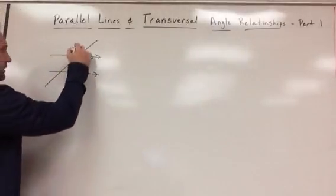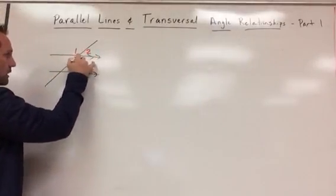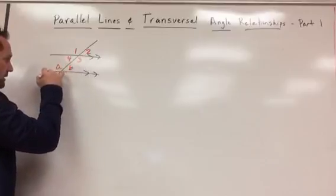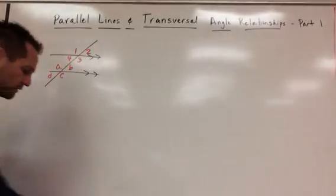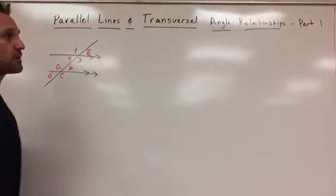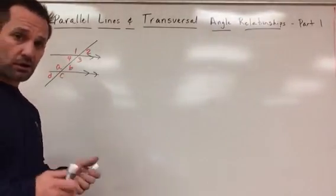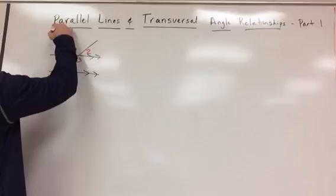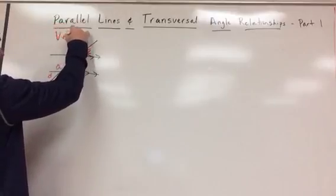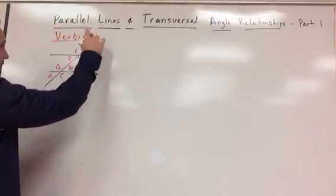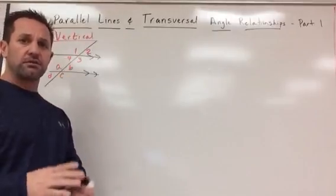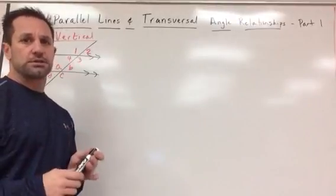So I'm going to label these angles. And I'm going to label them one and two and three and four. And then I'm going to go A, B, C, D. Okay, so eight different angles. And the first pair of angle relationships that we're going to talk about, you've actually already heard and you've done some work. They're going to be vertical angles.